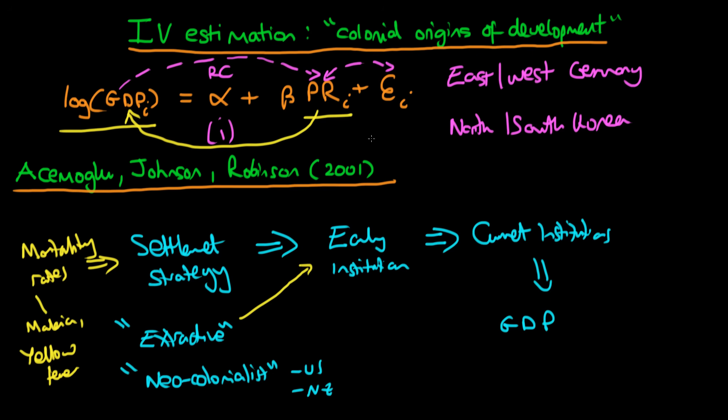The idea with this mortality rate instrument is that it affects property rights but doesn't affect any of these other omitted factors. In fact, I'm oversimplifying the situation. In their research paper they actually looked into whether mortality rates were affecting these various omitted factors by including dummies for each of these factors. It didn't actually affect the results very much anyway.